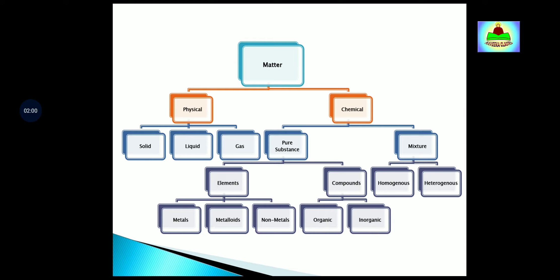Now what are elements? Particles of an element consist of only one type of atom. These particles may exist as atoms or molecules. Elements have three types: metals, metalloids, and non-metals.